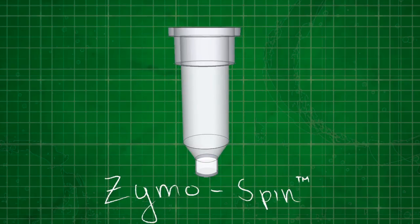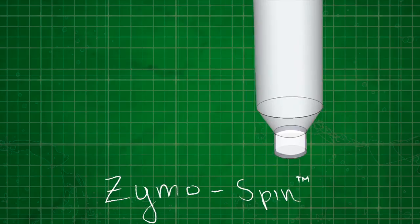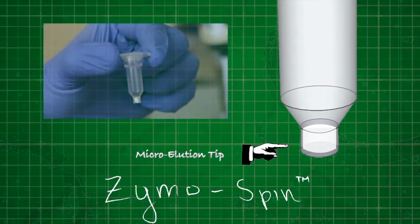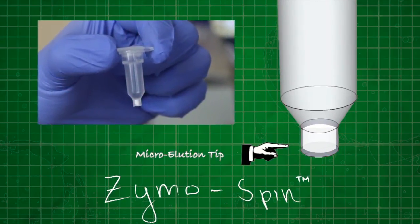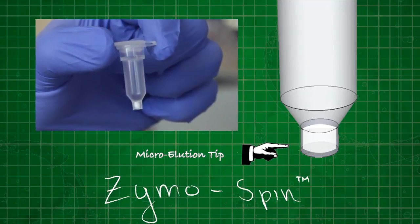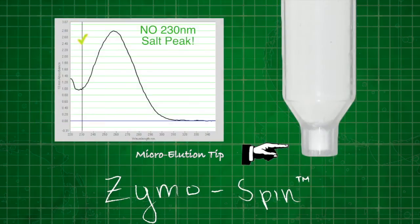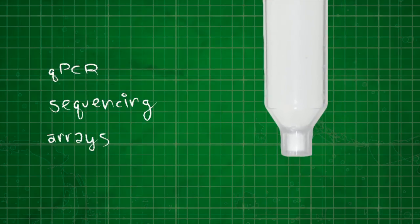The design of the column facilitates elimination of all buffers prior to elution, since the tip is unobstructed by any flat barriers that might retain buffers. This allows for elution of pure RNA and DNA, perfect for even the most sensitive assays.